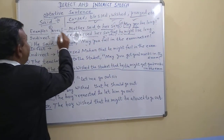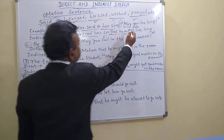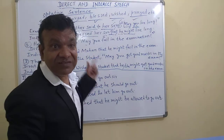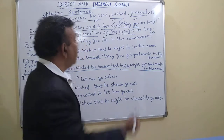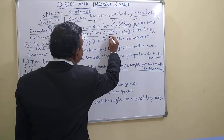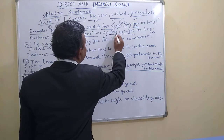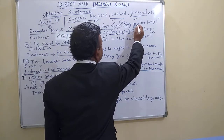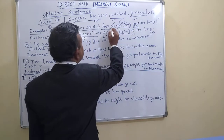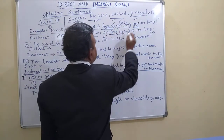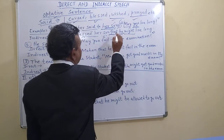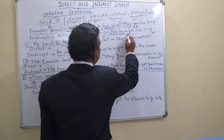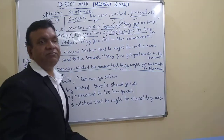For example: 'Mother said to her son, may you live long.' Here, mother is giving a blessing, so 'said to' is changed to 'blessed.' The inverted commas are removed and 'that' is added. 'You' is the second person object, and since the object is 'her son,' 'you' changes to 'he.' 'May' changes to 'might.' So the indirect form is: 'Mother blessed her son that he might live long.'